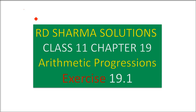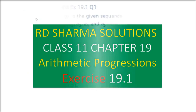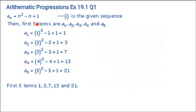This is R.D. Sharma Solutions Class 11, Chapter 19, Arithmetic Progressions, Exercise 19.1. If the nth term aₙ of a sequence is given by aₙ = n² - n + 1, write down its first 5 terms.